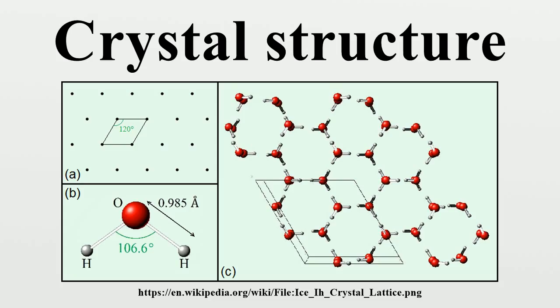Lattice systems: These lattice systems are a grouping of crystal structures according to the axial system used to describe their lattice. Each lattice system consists of a set of three axes in a particular geometric arrangement. There are seven lattice systems.